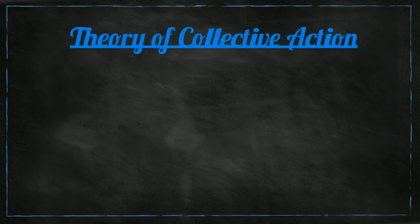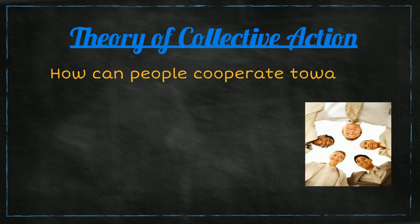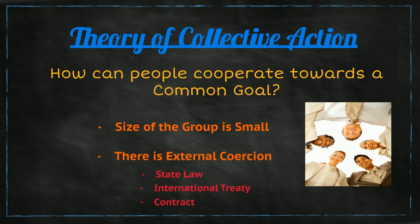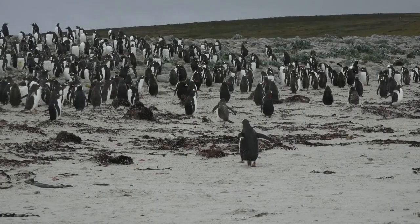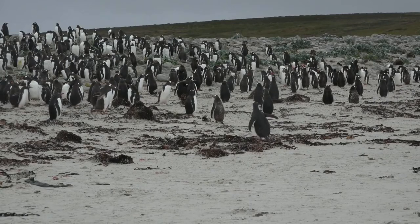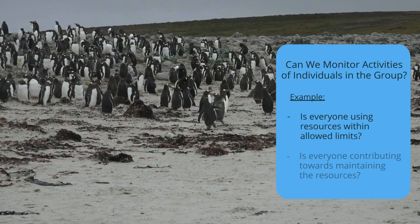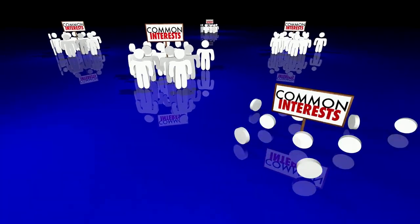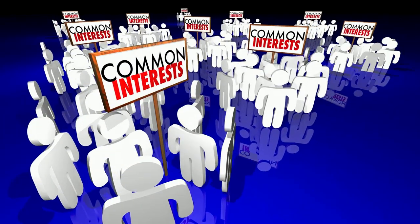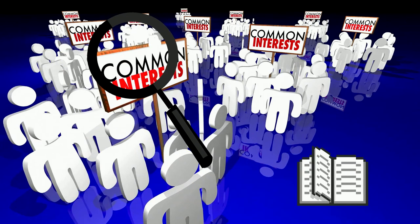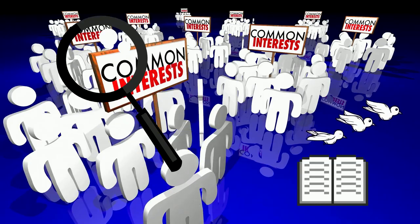The theory of collective action states that a group of individuals can come together to work towards a common goal, provided the size of the group is small enough and there is some external coercion in the form of a state law, an international treaty, or a contract which forces people to cooperate. The success of collective action depends on how well the group can monitor the activities of individuals — like whether people are using resources within allowed limits or contributing towards maintaining the resources. Usually, collective action works when group sizes are small, as the cost of monitoring is lower for smaller groups. In larger groups, the cost of monitoring increases and it becomes difficult to collect accurate information about everyone's actions, making it easier for people to free ride.